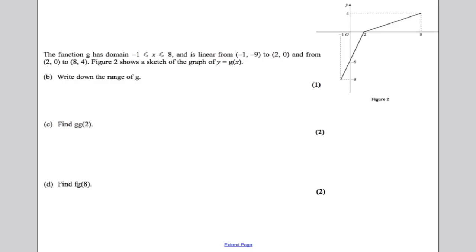Now, the rest of the question, the majority of the rest of the question is about a new function g. It tells you the domain x is bigger than or equal to negative 1 and less than or equal to 8. So look, here's the graph of it here. The x value is between negative 1 and 8 inclusive. And it is linear from negative 1 to negative 9. So it's linear from here to here and it's linear from here to here. The figure 2 shows a sketch of the graph.